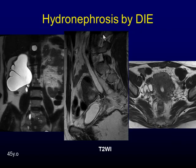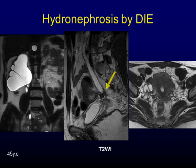The ureter is the second most frequently involved organ in the urinary tract. This patient had bilateral endometriosis. On coronal and sagittal T2-weighted image, right renal pelvis dilatation and dilatation of the ureter is found. At the bottom of the dilated ureter, an irregular hypointense region is found. On axial image, that region is clarified as part of an irregularly thickened uterosacral ligament with traction of the rectal wall.